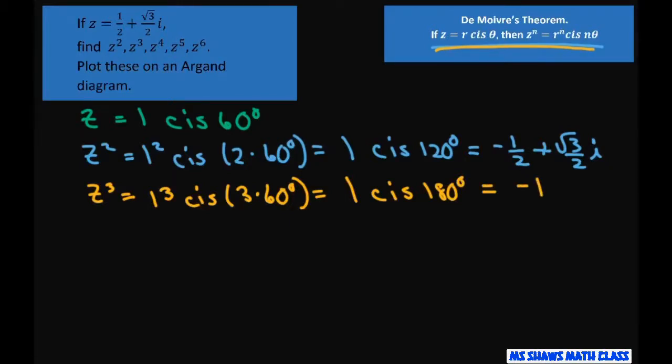Let's do z^4. That's 1^4 cis (4 × 60°), which equals 1 cis 240°, which equals -1/2 - (√3/2)i. Just remember what quadrant you're in.